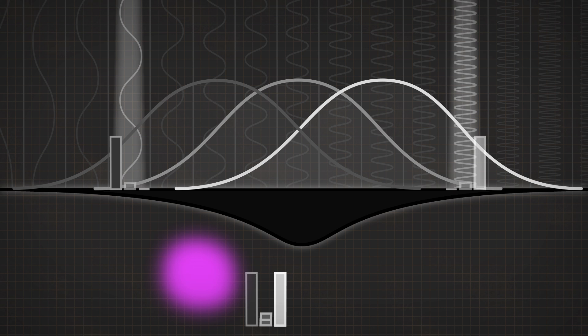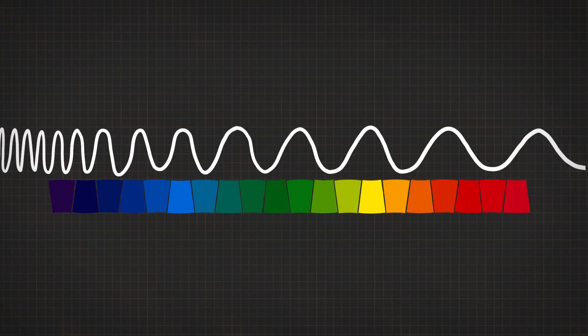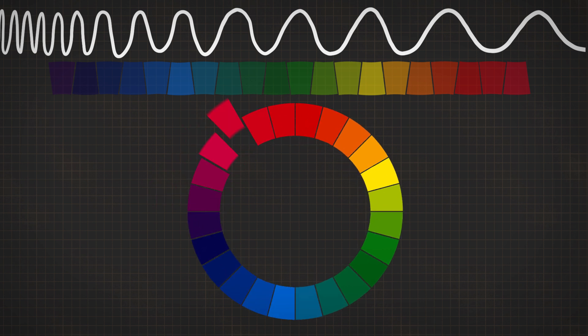It doesn't feel special, does it? Violet can be seen with a single wavelength and it's pretty similar to purple — who can even tell the difference? I can't. There's no reason to think to organize color into a circle. Wavelength is like a straight line. But the color wheel is intuitive and useful, at least if you include the colors we see by mixing light from the ends of the spectrum.